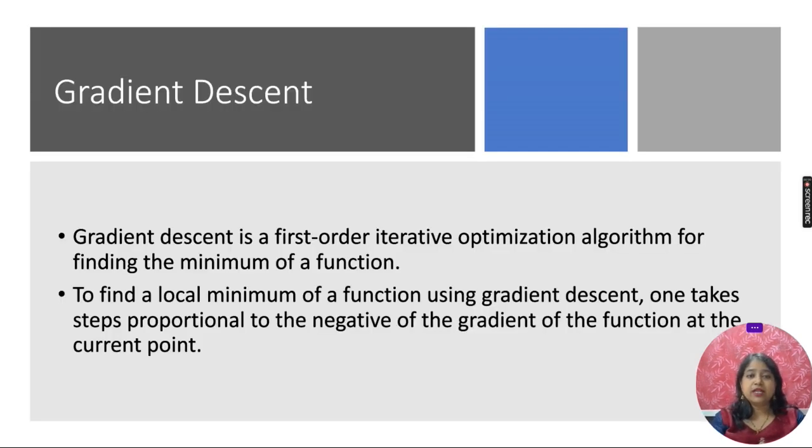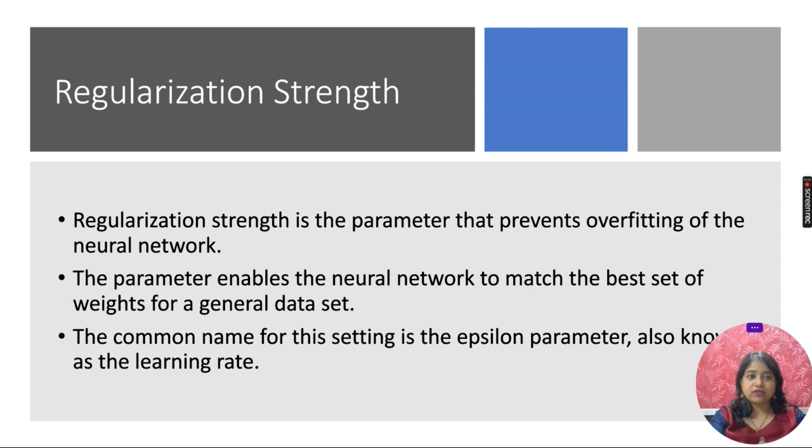Gradient descent is the first order iterative optimization algorithm for finding the minimum of a function. To find the local minimum of a function using gradient descent, one takes steps proportional to the negative of the gradient of the function at the current point.